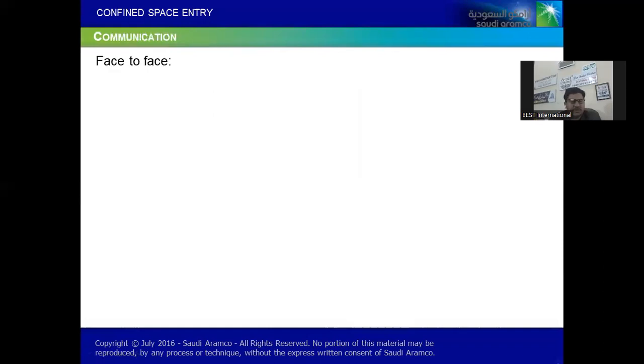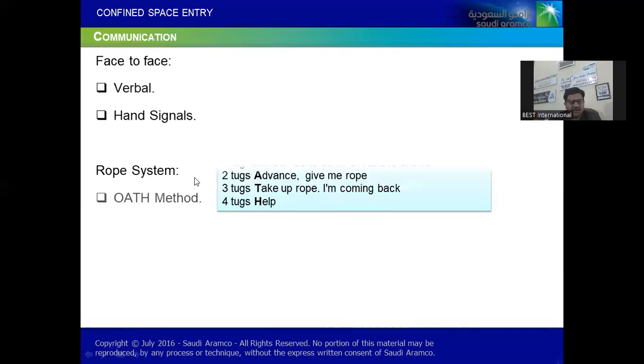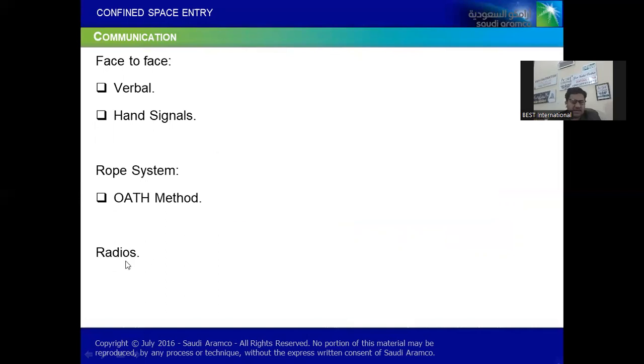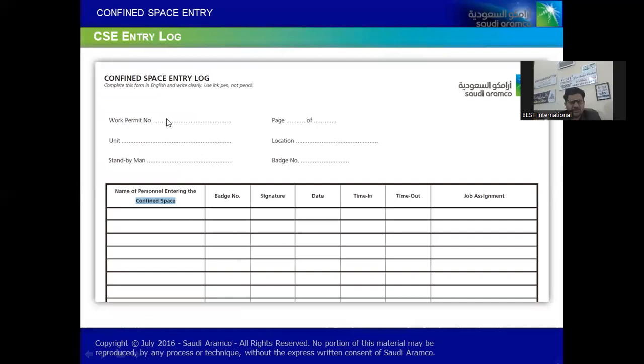Especially face-to-face, could be with hand signals, rope system - like one tug, one tug means okay, if it is okay to answer. And two tugs means give me rope, that I need to go further. Or three, take up rope, I'm coming back. Or four tugs means help, I need help, kind of emergency. So we call it rope method. Otherwise there is another one - radios, like CSE log sheet, like log in and out. These are communication methods. How the confined space entry log looks like - the work permit number, page, unit, location, standby man badge number, confined space name of the person you need to mention, and badge number you truly have to sign, and date, time in, time out, and job assignment, what exactly you are performing.